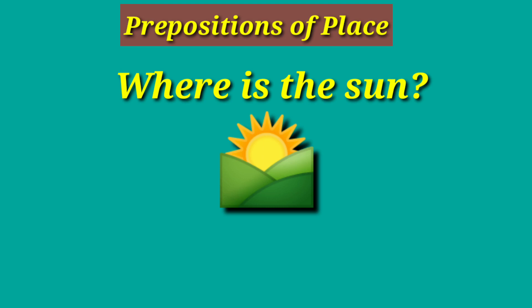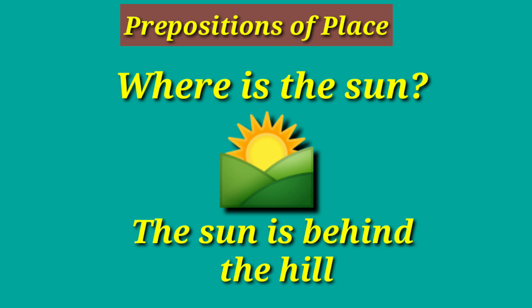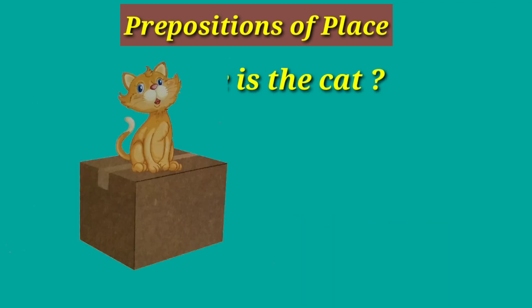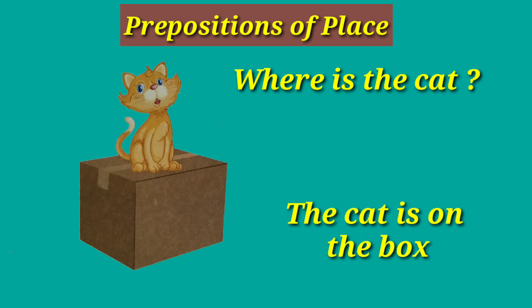Where is the sun? The sun is behind the hill. Where is the cat? The cat is on the box.